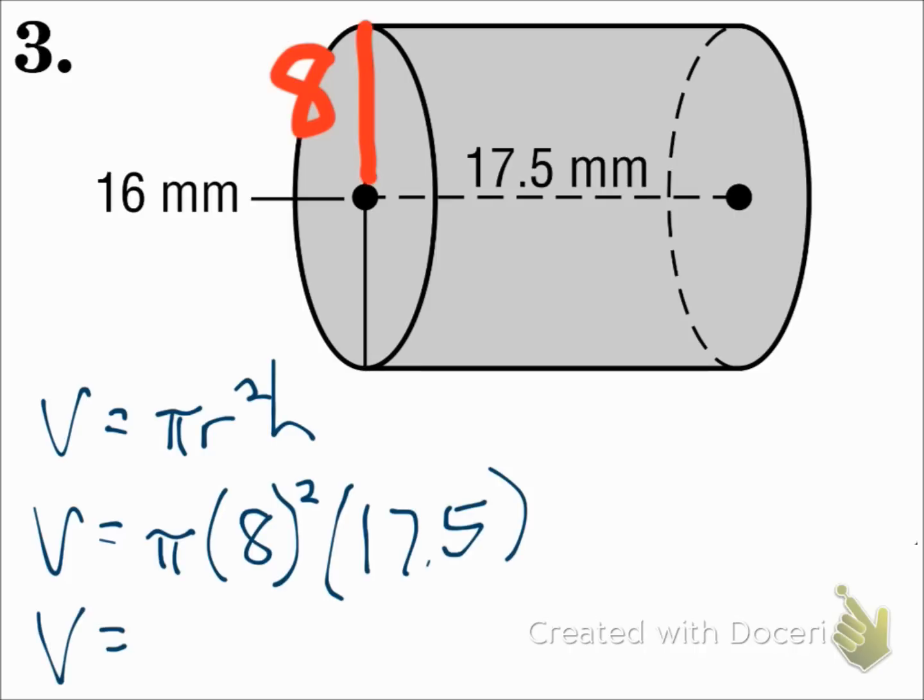So the total volume is 3518.6, and that will be millimeters cubed. So take half of the diameter to get the radius, and substitute everything in.